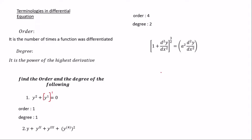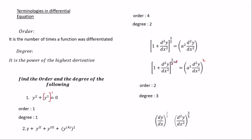Example 3 is a bit more complex. When the derivative is expressed with a fractional exponent, note that the order and degree must always be whole numbers. So you need to eliminate the fraction. Multiply through by 2 to clear the denominator — this gives you the second derivative squared and another term cubed. The order is 2 (second derivative) and the degree is 3 (the power of the highest derivative after clearing the fraction).